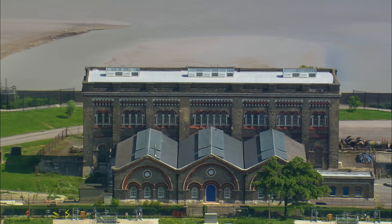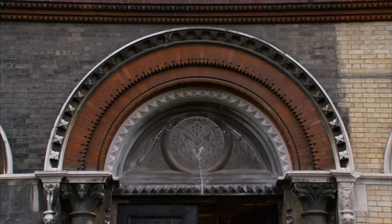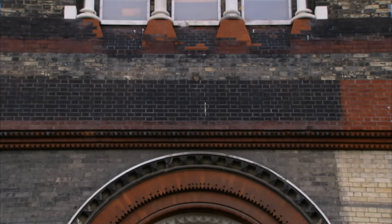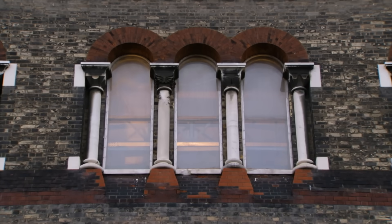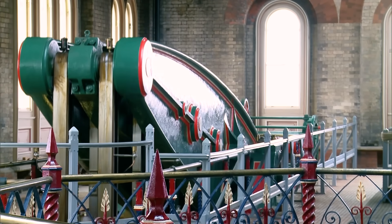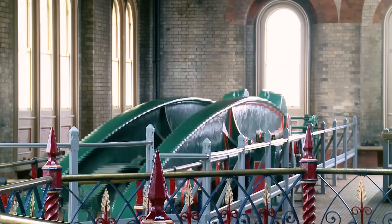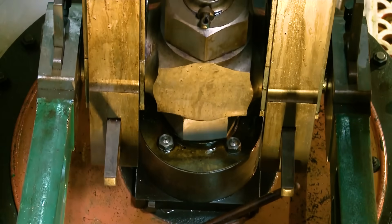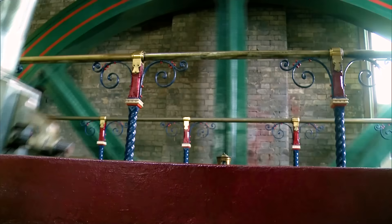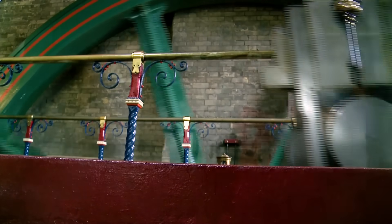This is the Crossness Pumping Station in London. Its ornate architecture and elaborate ironwork belie its original, somewhat disgusting purpose: to lift raw sewage from London's southern outfall, the lowest point in one of London's biggest sewers, up to the ground surface where it could be discharged directly into the Thames River.